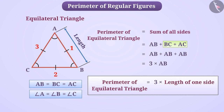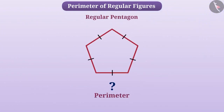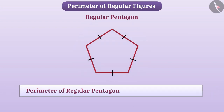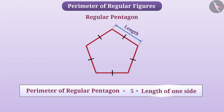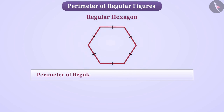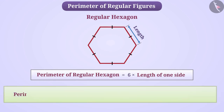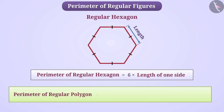You can stop the video and find the perimeter of the regular pentagon. The perimeter of a regular pentagon is equal to 5 multiplied by the length of one side. Similarly, the perimeter of a regular hexagon is equal to 6 multiplied by the length of one side. Thus, the perimeter of any regular polygon is equal to the number of sides of that polygon multiplied by the length of one side.